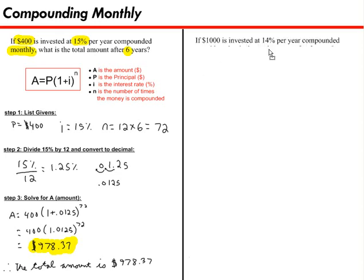Here's how your problem reads. If $1,000 is invested at 14% per year, compounded monthly, what is the total amount after three years? Okay, try that one out now.